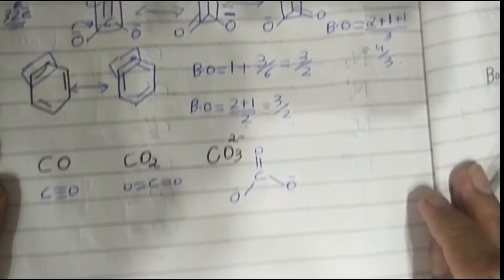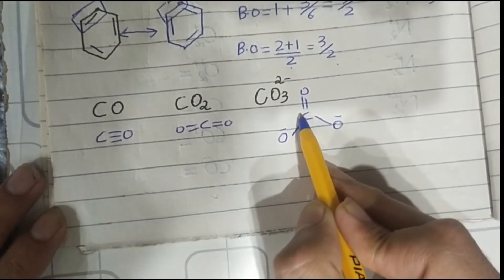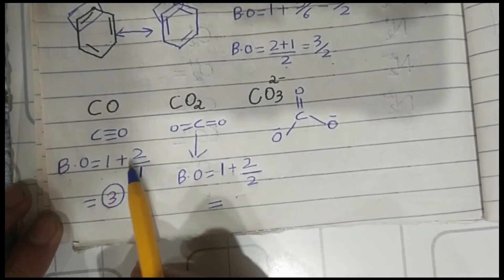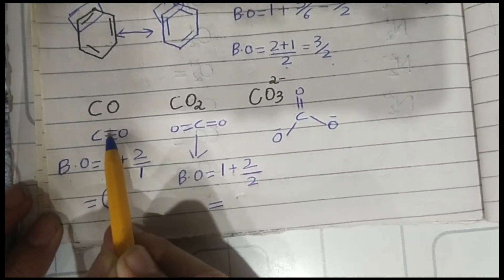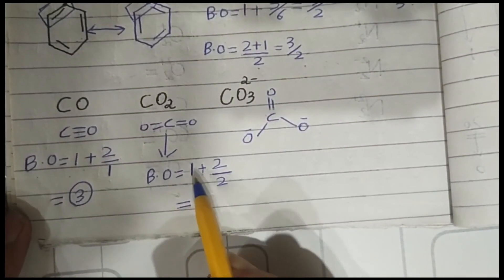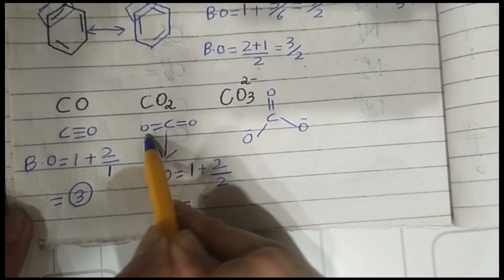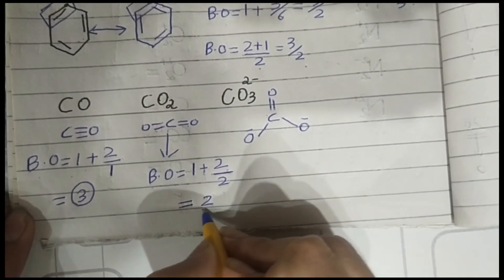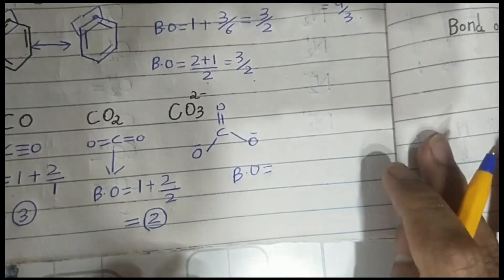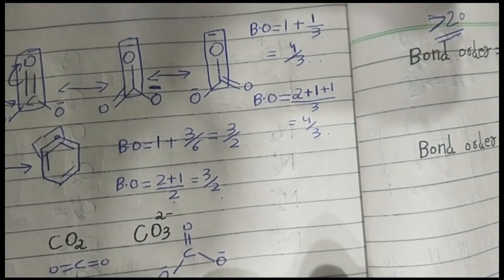For carbon dioxide (CO2): bond order is equal to one plus the number of pi bonds — here there are two pi bonds — divided by the number of sigma bonds, which is two. This gives a bond order of two. For carbonate, the bond order was already calculated in this example as 4/3, approximately 1.33.